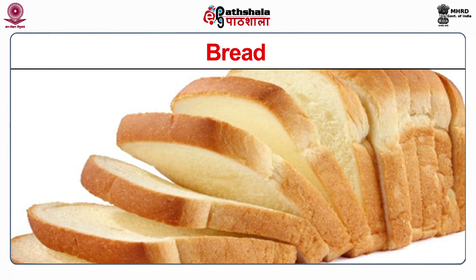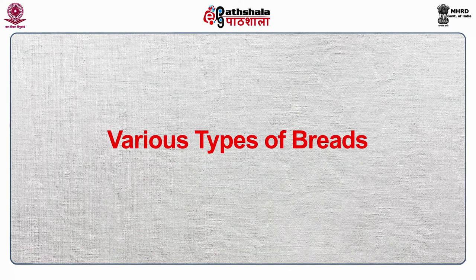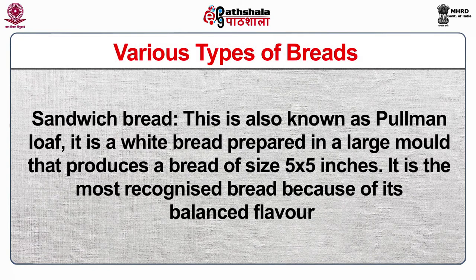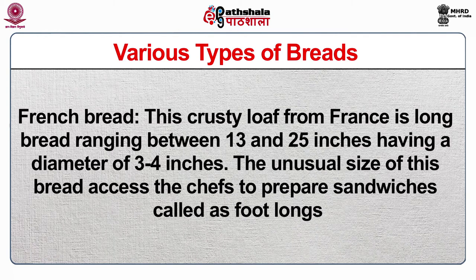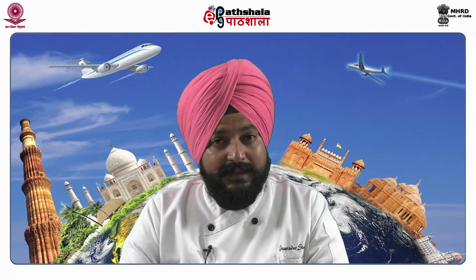Bread must be thick and no more than nine hours old. Sandwich bread, also known as Pullman loaf, is a white bread prepared in a large mould producing a size of 5 by 5 inches — the most recognized bread due to its balanced flavour. French bread is a crusty loaf ranging between 13 and 25 inches with a diameter of 3 to 4 inches; its unusual size allows chefs to prepare sandwiches called footlongs. Rye bread uses rye herb flour and has a much richer taste, typically used for seafood sandwiches like smoked salmon and tuna.